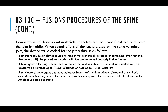Finally, on fusions: fusion procedures of the spine often use combinations of devices and materials on a vertebral joint to render the joint immobile. If an interbody fusion device is used to render the joint immobile, the procedure is coded to the device value interbody fusion device. If bone graft is the only device used, the procedure is coded with the device value non-autologous or autologous tissue substitute. If there is a mixture of autologous and non-autologous bone grafts, code the procedure with the device value autologous tissue substitute.